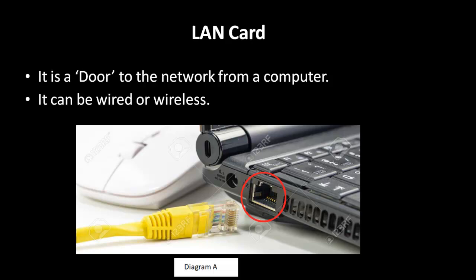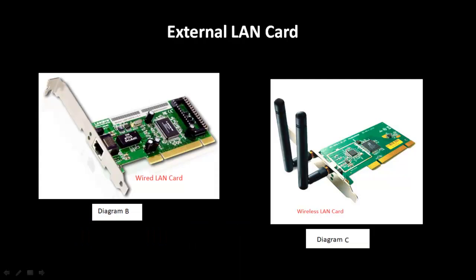As you can see, this encircled area is the LAN port which is an inbuilt LAN card. Nowadays we get pre-installed wired and wireless LAN cards in our computers. As you can see in the diagram, diagram B is an example of a wired PCI LAN card and diagram C is an example of a wireless PCI LAN card. PCI stands for peripheral component interconnect.